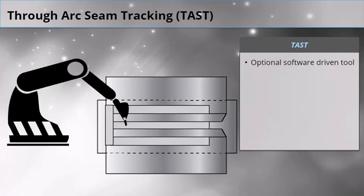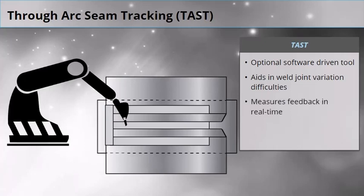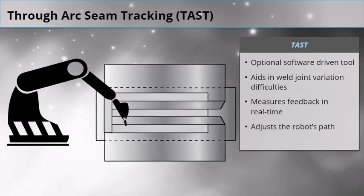TAST is an optional software-driven tool used to aid with weld joint variation difficulties. It measures feedback in real time and adjusts the robot's path.